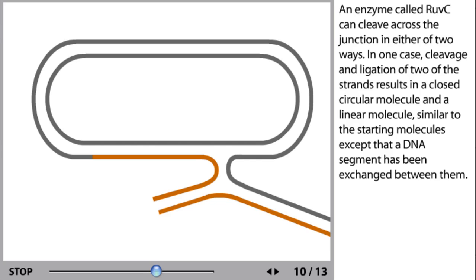In one case, cleavage and ligation of two of the strands results in a closed circular molecule and a linear molecule, similar to the starting molecules, except that a DNA segment has been exchanged between them.